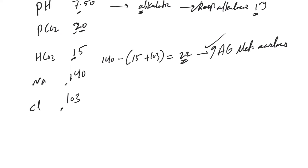Some of you may ask why we're calling this increased anion gap metabolic acidosis rather than just compensation for respiratory alkalosis. Remember, when we explained about the anion gap, the body does not respond to respiratory alkalosis by producing acid — it responds by losing bicarb. So increased anion gap metabolic acidosis indicates acid production, whether endogenous or exogenous. That's why it's not a compensatory mechanism: to compensate, we lose bicarb, not produce acids.